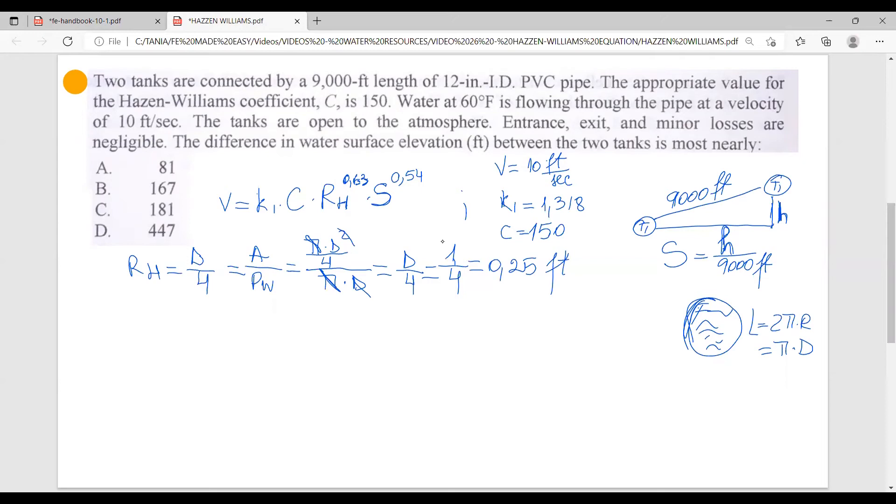We have 10 feet per second equals to K1, which is 1.318, multiply by Hayes and William coefficient, which is 150, multiply by hydraulic radius, which we just have calculated is 0.25 to 0.63, multiply by the slope is H over 9,000 feet, and all that is at 0.54.